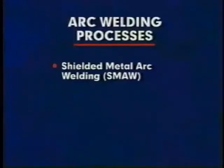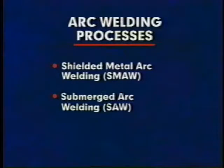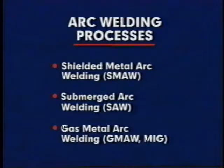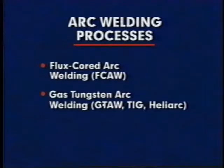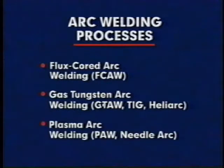Arc welding encompasses a variety of processes, the primary types being shielded metal arc welding, submerged arc welding, gas metal arc welding, flux core arc welding, gas tungsten arc welding, and plasma arc welding.